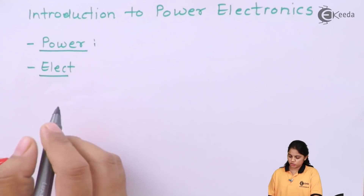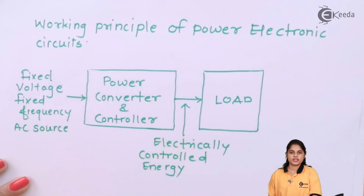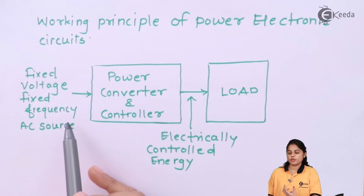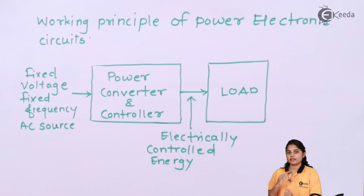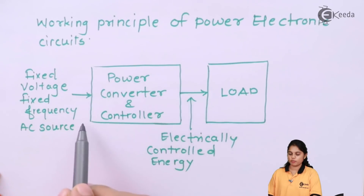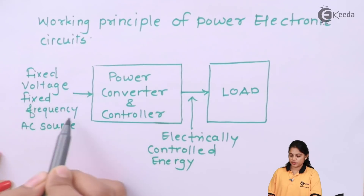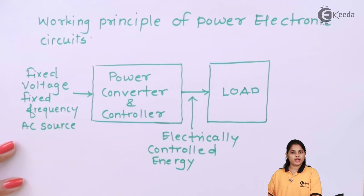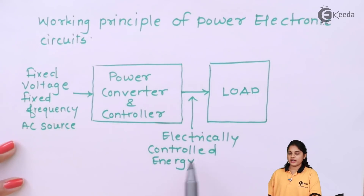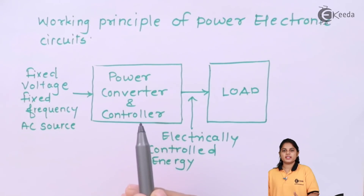In the basic diagram, I will show you the working principle. If you have an AC source of fixed voltage, this is the basic working principle of a power electronic circuit. At the input side, you have a fixed voltage, fixed frequency AC source, and this electrical energy is to be provided to some kind of load. As per the requirement, you can convert this AC signal into the suitable form required for that particular application. Using the power converter and controller block, you can convert the fixed voltage, fixed frequency AC source either into an AC form or a DC form as per the requirement of the load. At the output of the power converter, you will get electrically controlled energy — you can change the form of the electrical signal as well as control the amount of energy given to the load.